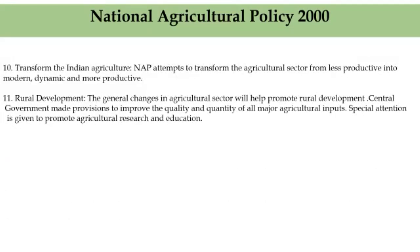The tenth feature is to transform Indian agriculture. The agricultural policy attempts to transform the agricultural sector from a less productive into a modern, dynamic, and more productive one. A 4% growth has been targeted to ensure enough supply of agricultural commodities. It is necessary to support the agricultural sector with all the required changes in technology, input supply, tax reform, and structural and institutional changes, so that it can face the competition in the liberalized global economy.